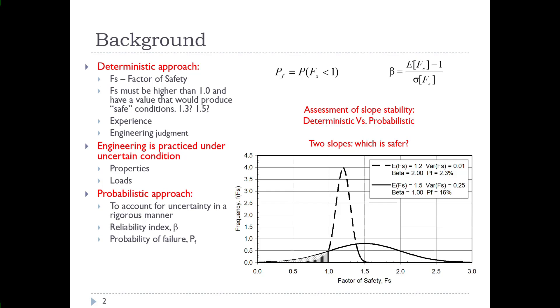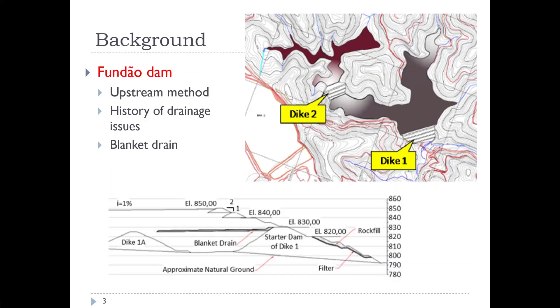So just having a higher factor of safety does not always relate to a lower probability of failure is what this example is trying to bring out. We are trying to illustrate in this paper the probabilistic approach to particularly the Fundão Dam. This was work performed at the University of Guyana. A bit of background on the Fundão Dam: it was constructed with the upstream method. There's a history of drainage issues if you read through the reports.